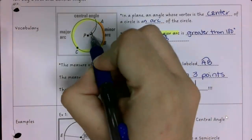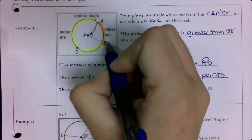So, this measure right here, whatever I have it in degrees is going to be the same as AB.